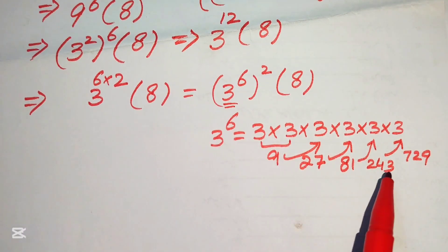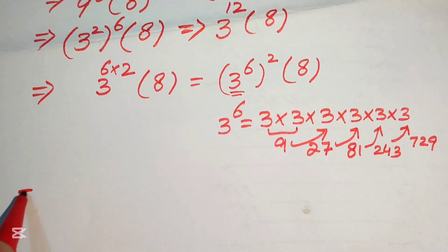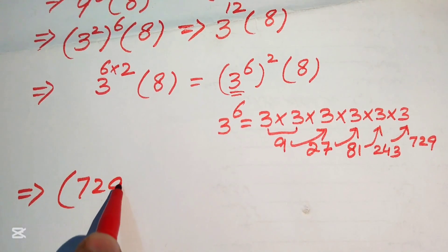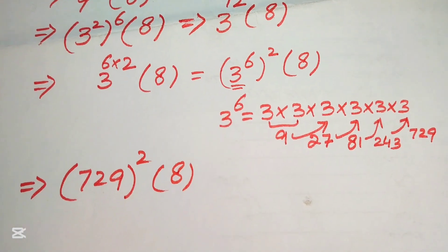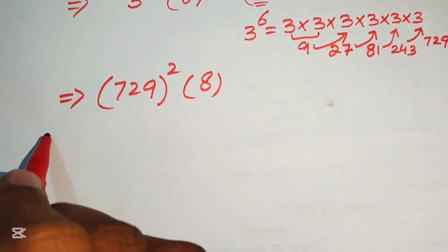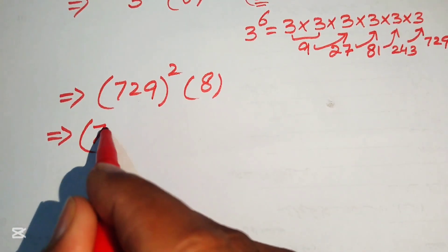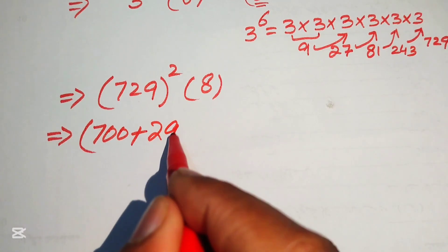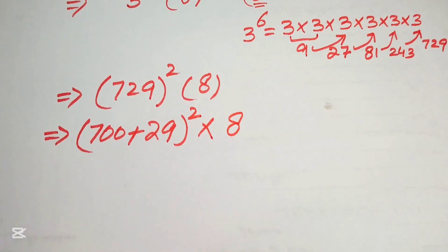We replace 3^6 with 729, so the expression becomes 729 squared times 8. To compute 729 squared, we break 729 as 700 plus 29, giving us (700 + 29)^2 times 8.